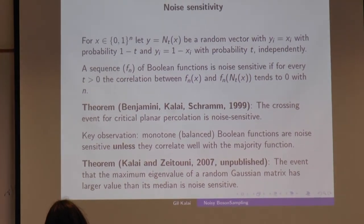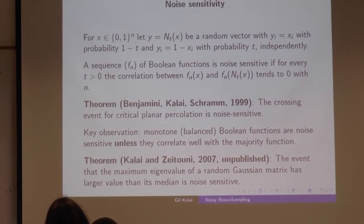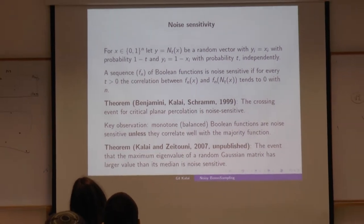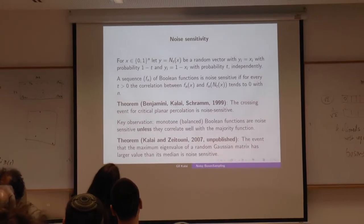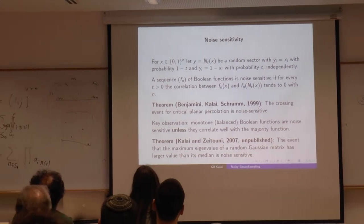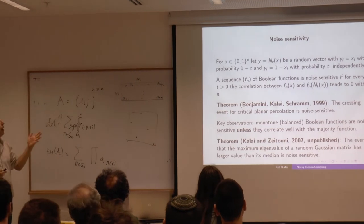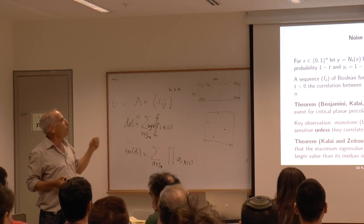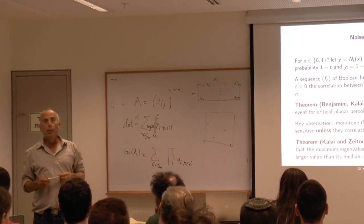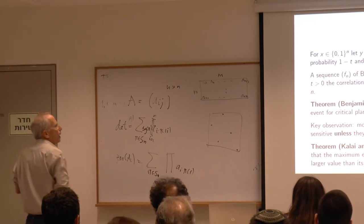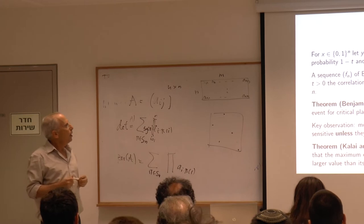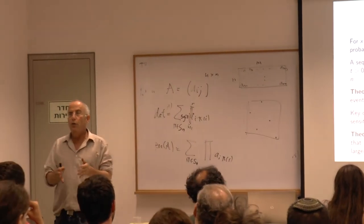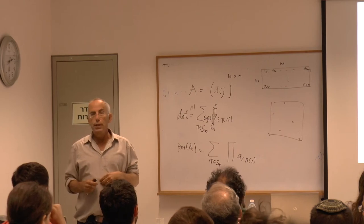We look at Boolean functions on {0,1}^n. When we have a vector x in this discrete cube, a noisy version y is obtained by independently flipping each bit with probability t. A sequence of Boolean functions is noise sensitive if the correlation between the function for the original input and the function for the noisy input goes to zero.